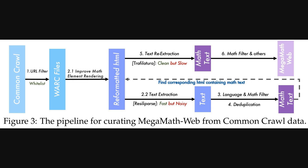Figure three gives us a closer look at the actual pipeline they used to create just the MegaMath Web part, starting from Common Crawl data. They start with URL filtering, then reformat the HTML — specifically to handle math elements better. After that, it looks like a two-stage process: a fast but potentially noisy extraction first, followed by filtering and deduplication, and then a slower, cleaner re-extraction step using something called Trophilatura, to get the final high-quality math text that makes up MegaMath Web.